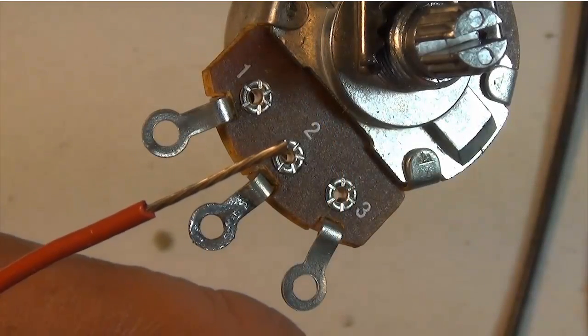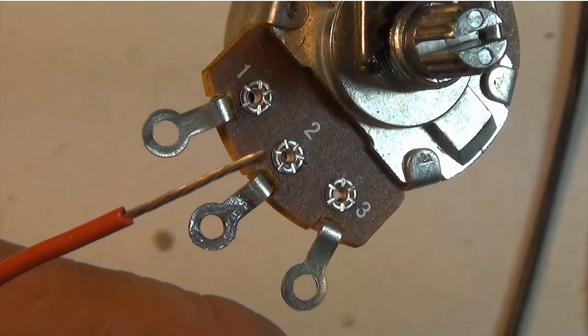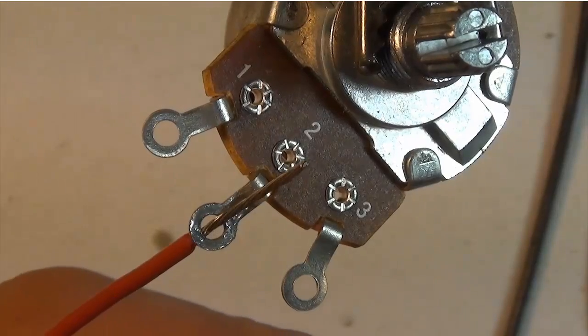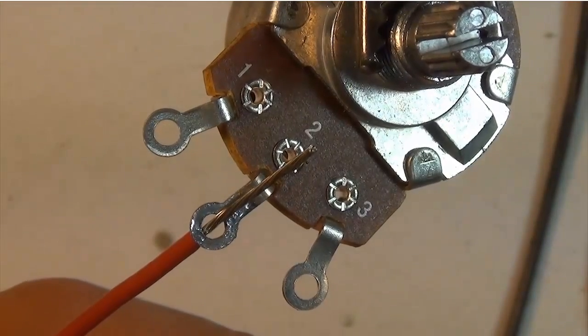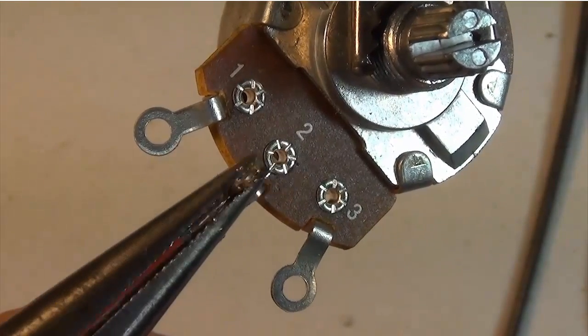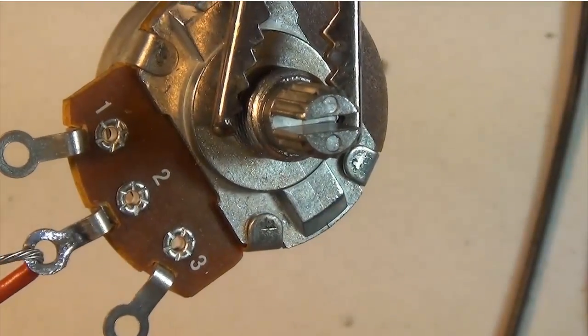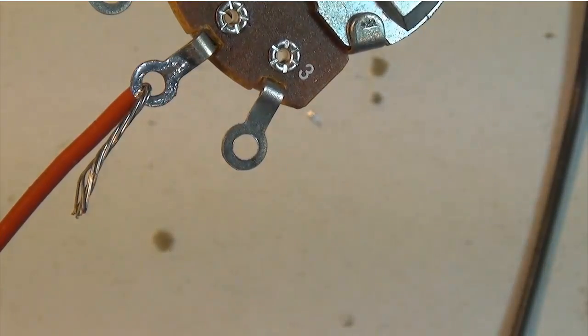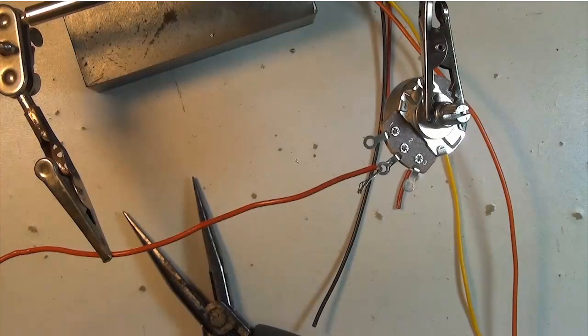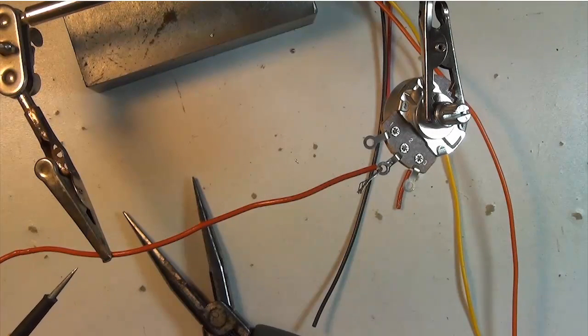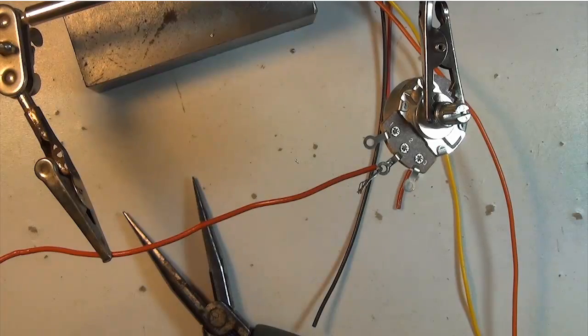Before I insert the stranded wire into the eyelet lug, I make sure I twist all of the wire strands together very tightly. Insert the wire so that the insulation just touches the eyelet lug, and then fold the wire over to form a bit of a hook like this. To make sure that the wire does not move while I'm soldering, I'm going to use the other alligator clip in my helping hand and clip the wire into it. Now everything is nice and secure and I'm ready to solder.